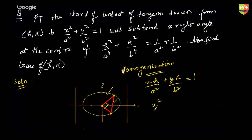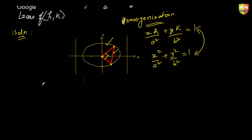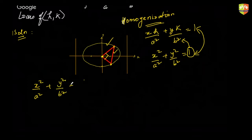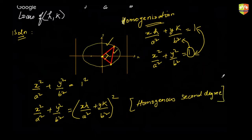I have to homogenize the chord of contact equation with the equation of the ellipse — that means using these two equations to create a uniform degree-two equation. So in place of 1 in the ellipse equation, I replace it with (xh/a² + yk/b²)², making it a homogeneous second-degree equation. This represents the pair of straight lines OP and OQ together.